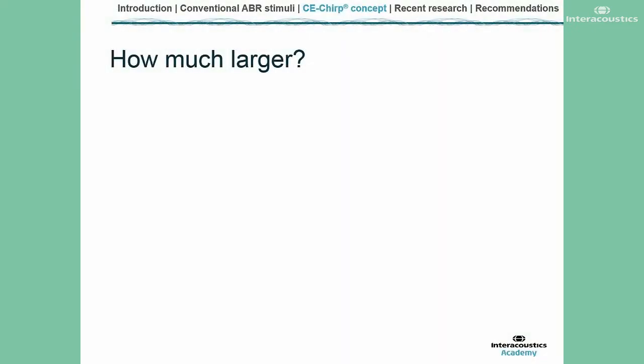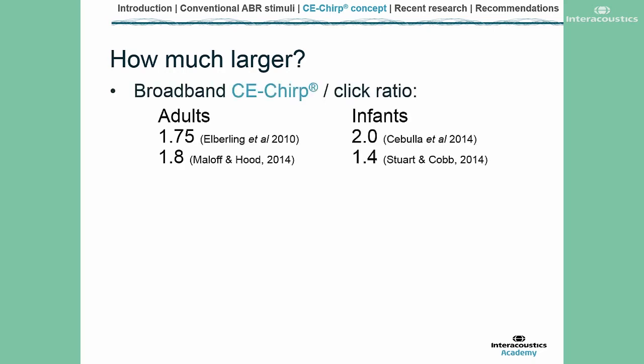The response with CE chirp is larger, but how much larger is it compared to the traditional click? Various studies have looked at the ratios. For broadband chirps in adults, Klaus Eibling and colleagues found the chirp is about 1.7 times larger, and Marloff and Hood found it is about 1.8 times larger.